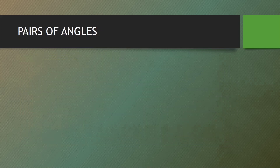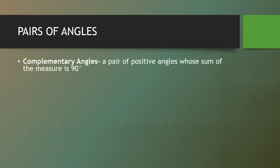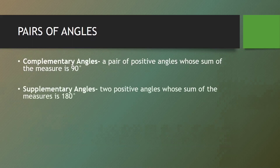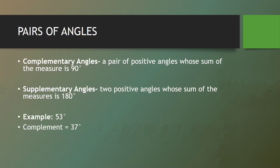We also have pairs of angles. First are complementary angles, which is a pair of positive angles whose sum of measures is 90 degrees. And supplementary angles are two positive angles whose sum of measures is 180 degrees. For example, given an angle that measures 53 degrees, to find its complementary angle, we subtract 53 from 90 degrees, which gives us 37 degrees. And 37 degrees plus 53 degrees equals 90 degrees, so they are complementary angles.